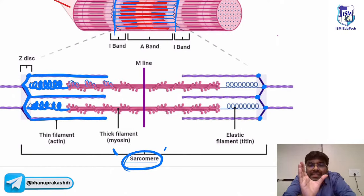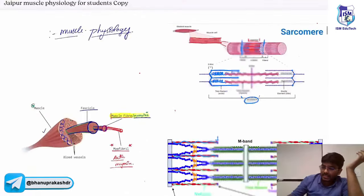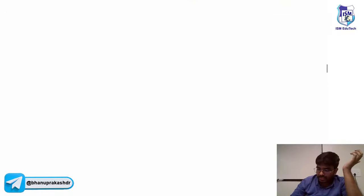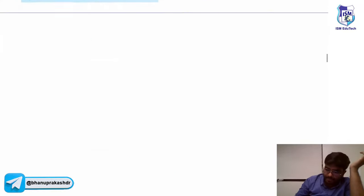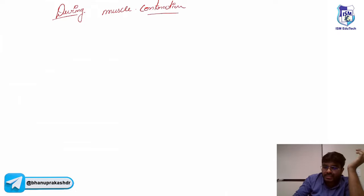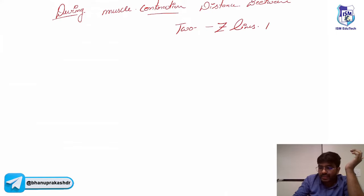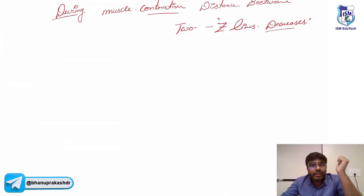During muscle contraction, the sarcomere is going to contract. What happens to the distance between the two Z lines? It decreases — the distance between the two Z lines decreases during muscle contraction.